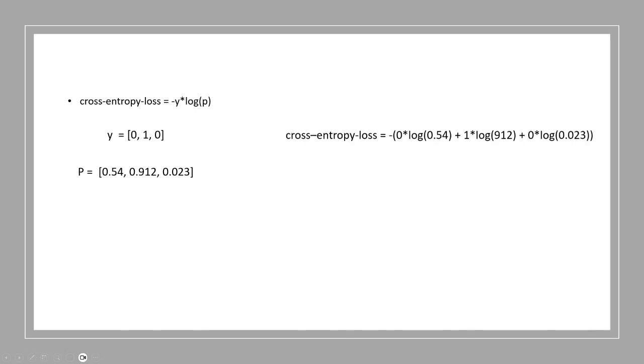So you can see there is a negative sign, so we put the negative sign in the beginning. And then 0, the first one from the list of y, 0 times log of p, the probability. So from the p, the first one is 0.54. So 0 times log of 0.54 plus the second one from y is 1. So 1 times log of second one from probability, 0.912. So 1 times log 0.912 plus third one of y is 0 times log of third one from p, 0.023. So this is going to be our cross-entropy loss.